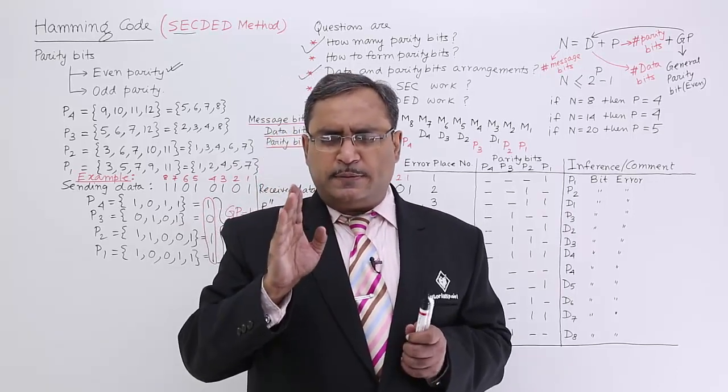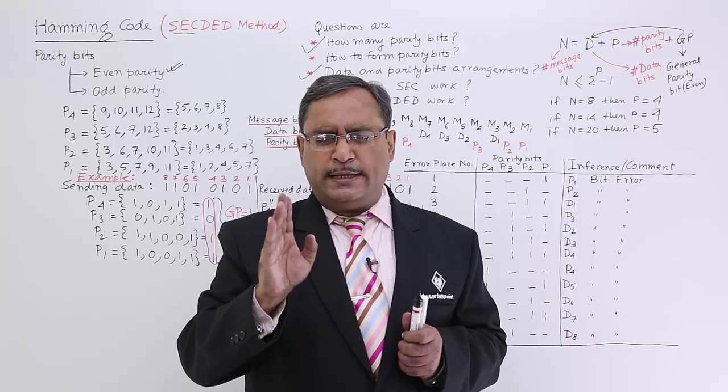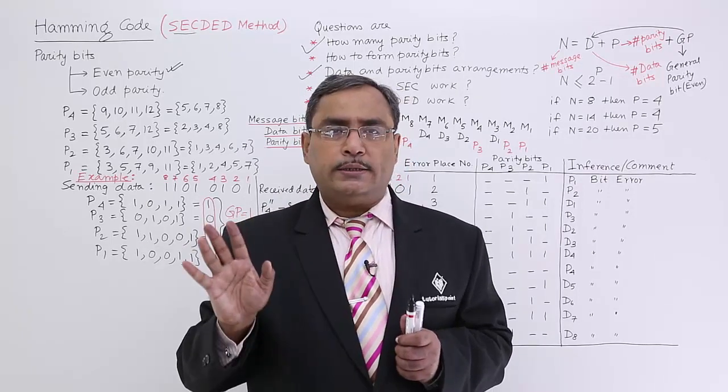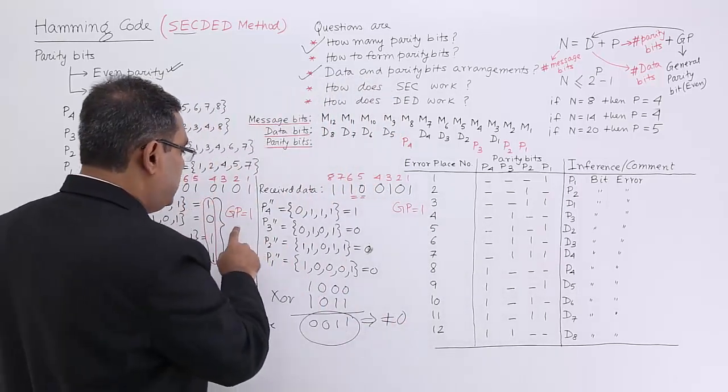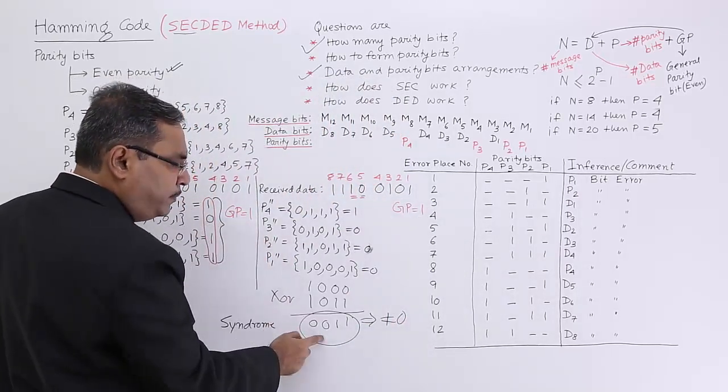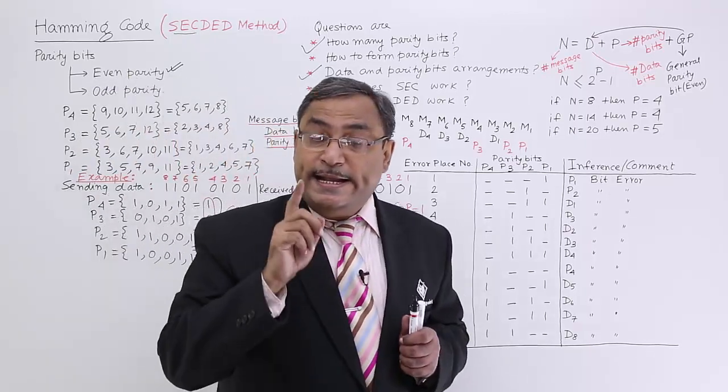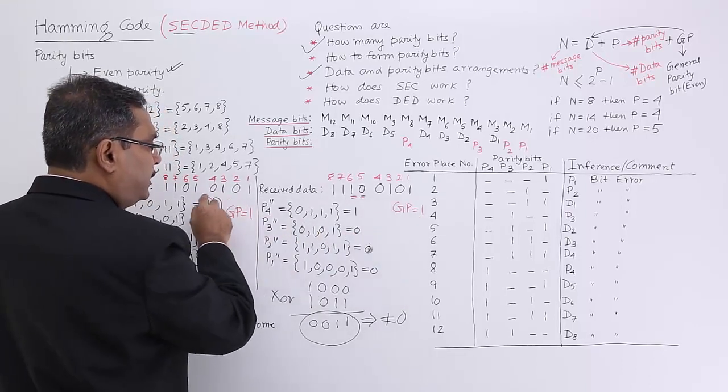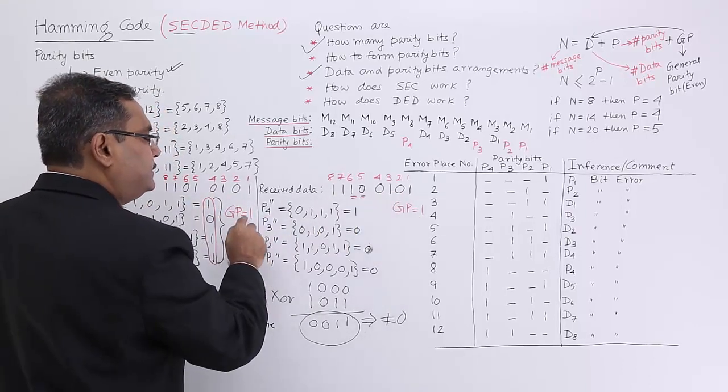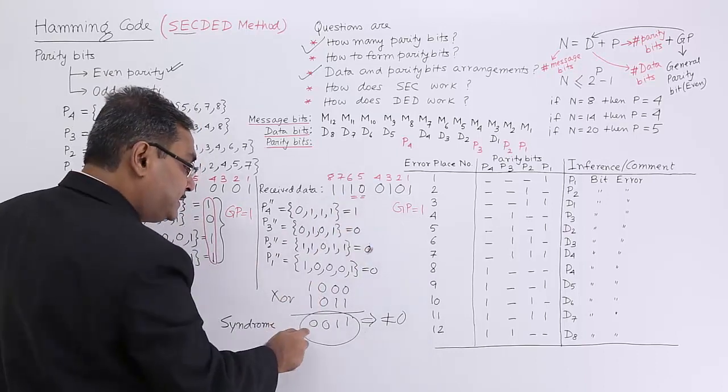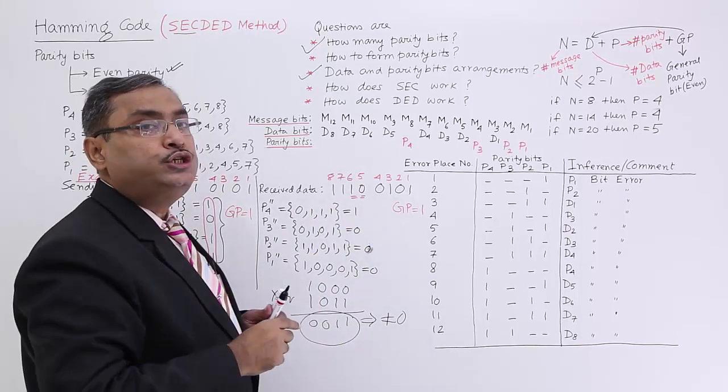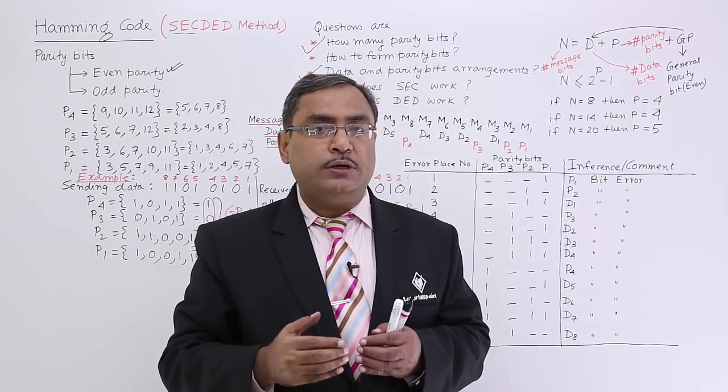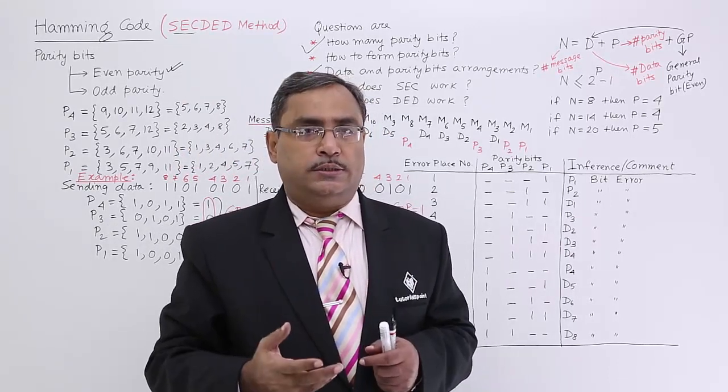If general parity bit says no error and syndrome is 0, that means no error. If the general parity bit says no error but the syndrome is non-zero, that means SECD. If the general parity bit says error, because whenever single bit error will take place, then the general parity bit will be different and also the syndrome will be non-zero. That will be the case of single error correction and I know the bit position where the error occurred.